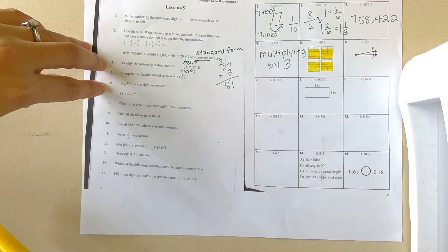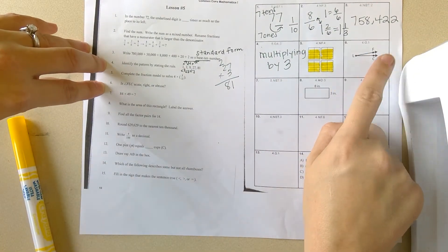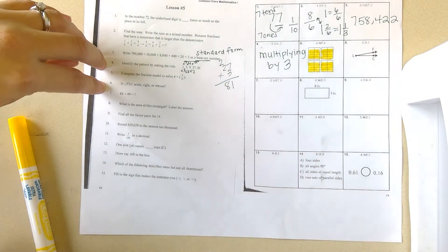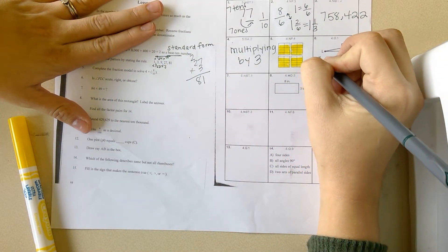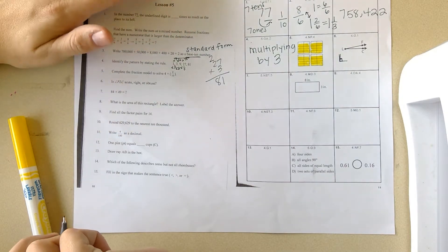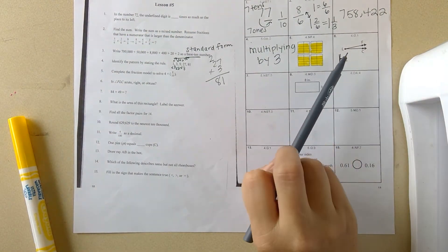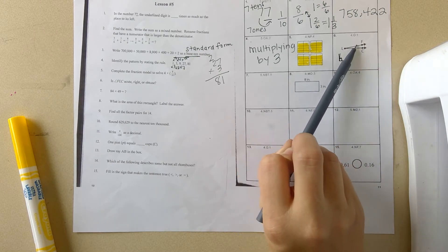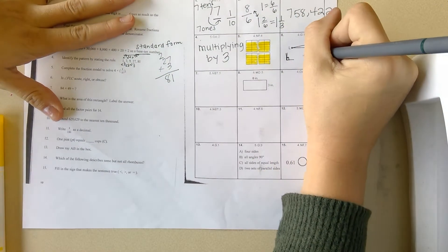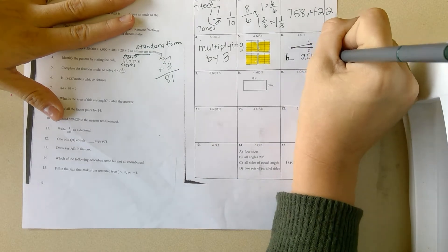Number six is angle, acute, right, or obtuse. A right triangle is like a perfect L. We can put that little box in the corner to show. Acute is anything smaller than 90 degrees and obtuse is anything larger. This is smaller, so this would be an acute angle.